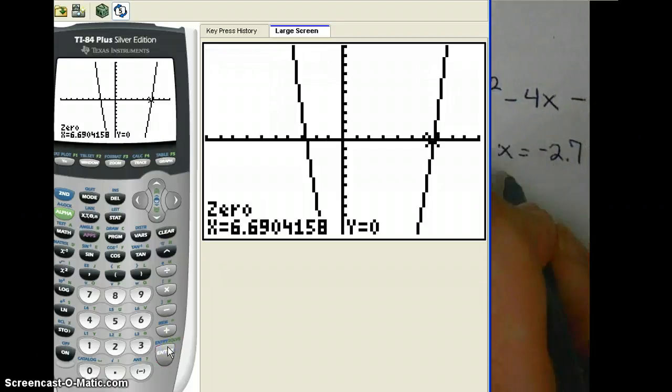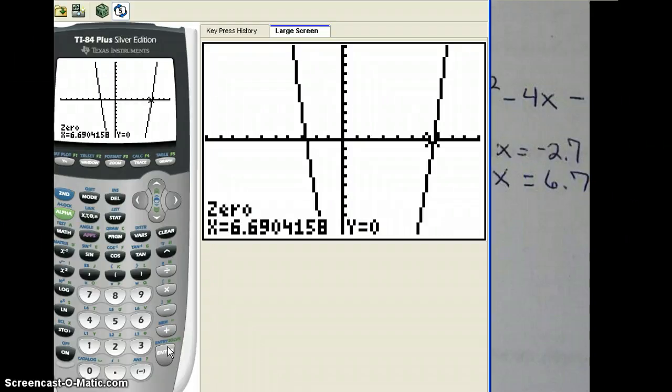And the second solution will be found at x equals 6 point, and let's round that to 7. And those are your solutions. Thank you.